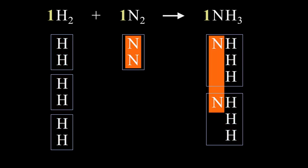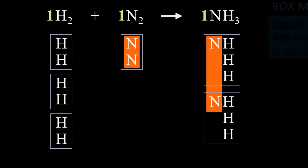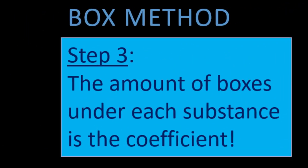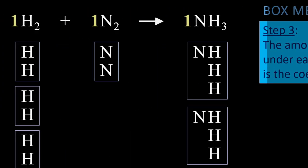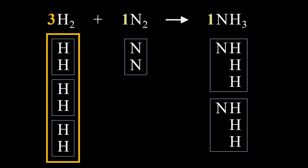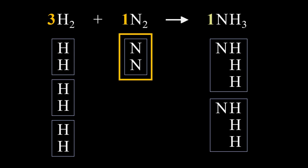So the atoms are balanced, but the equation needs coefficients. Step 3, the amount of boxes under each substance is the coefficient. 3 hydrogen boxes are a coefficient of 3, 1 nitrogen box is a coefficient of 1, and 2 NH3 boxes are a coefficient of 2.